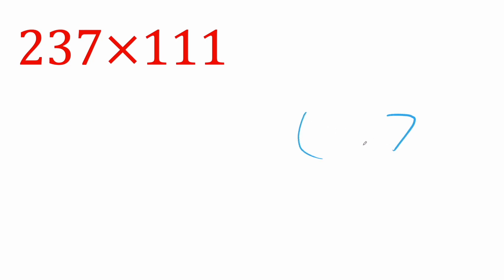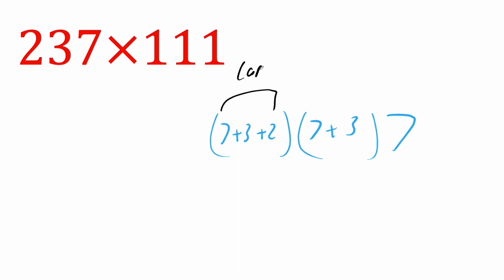So the first thing we're going to do is take this seven and put it at the end. Then I'm going to put a parentheses and do seven plus three. Then I'm going to do another parentheses: seven plus three plus two. And this is important — we're going to cap at three. Then the next one, we're going to shift one place, so instead of starting here, we start at three and two: three plus two. Then we shift one place again and we just get a two.